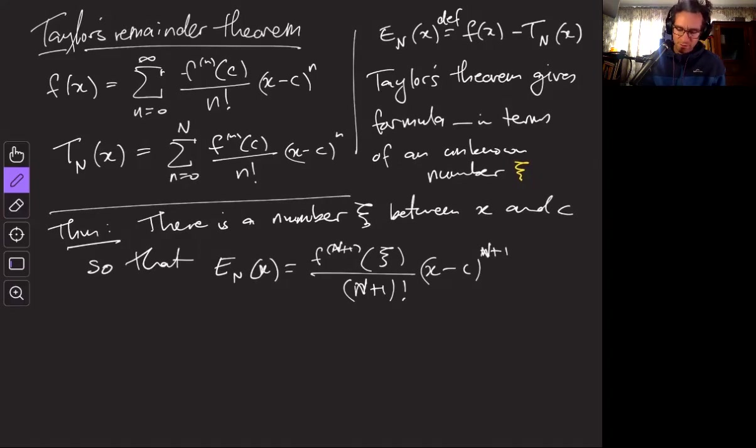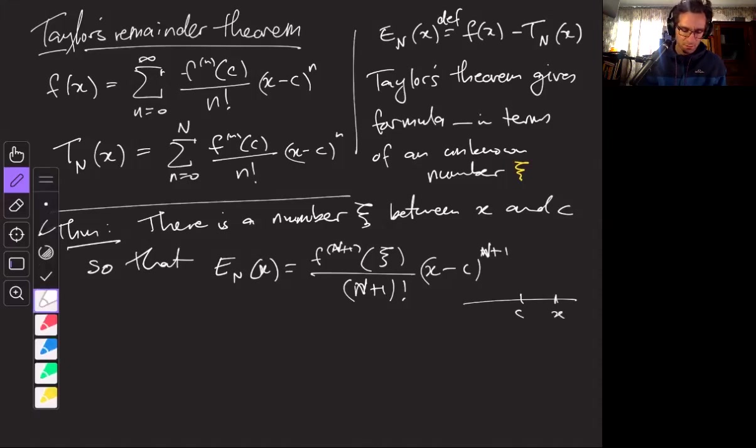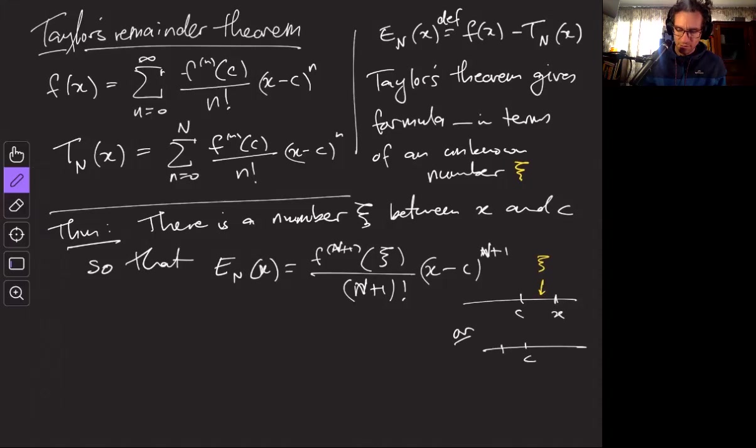So there's two cases: c here and x is here means xi is in here, or x is on this side and xi is in here. So depending where x is, there is some xi in there that works.